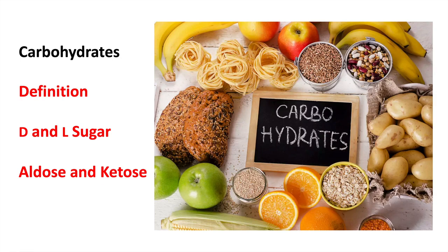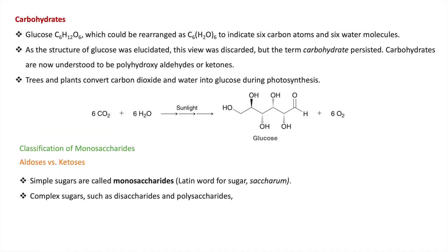Today we will study about carbohydrates — its definition, D and L sugar, aldose and ketose. Carbohydrates are widely abundant in nature and can be found in food products, fruits, wood of plants, and in our DNA. The simplest carbohydrate is glucose, with the formula C₆H₁₂O₆. This can be rearranged as C₆(H₂O)₆, showing it is a hydrated form of carbon — that is why the name 'carbohydrate' came about.